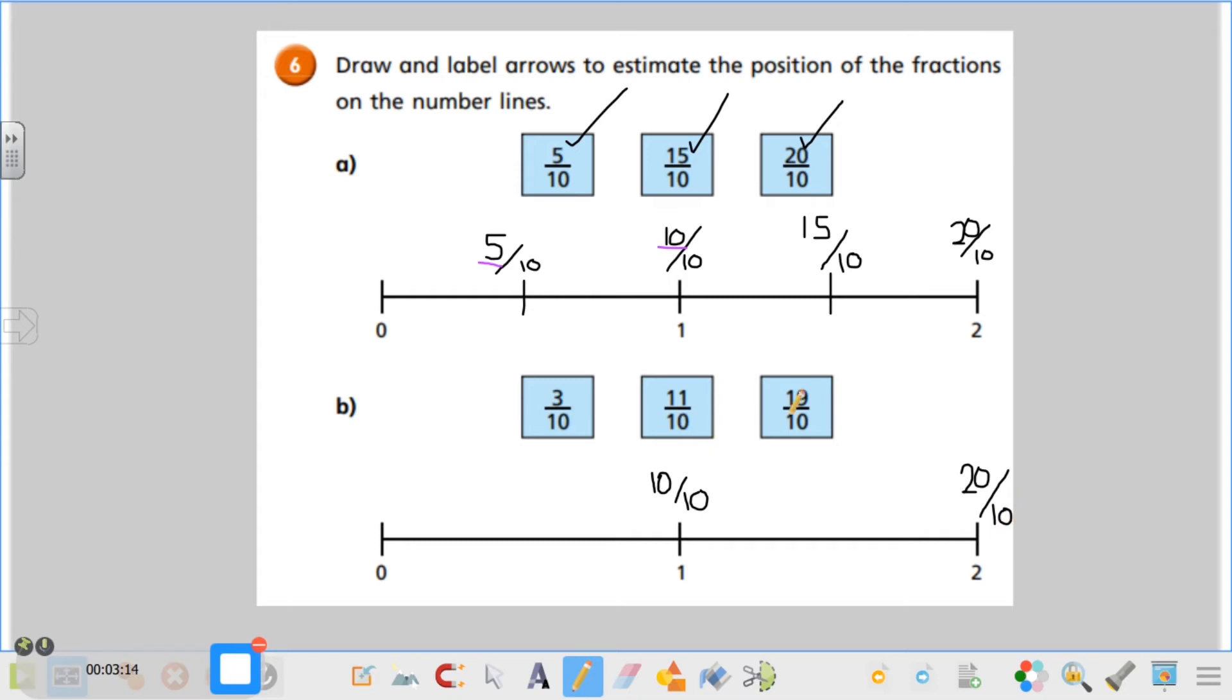Now I need to plot these ones here. I'm going to look at my numerator. I've got the number 3 and that is my lowest one. So on a normal number line between zero and ten, I know that 3 is going to go quite close to zero, so I might have 1, 2, 3.